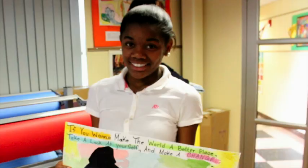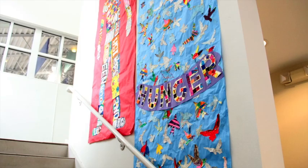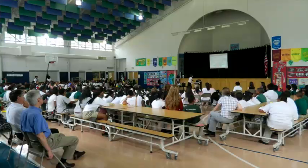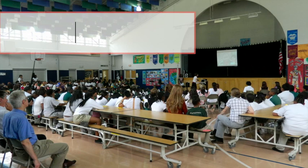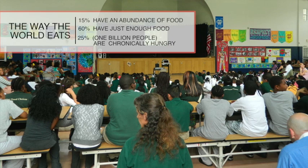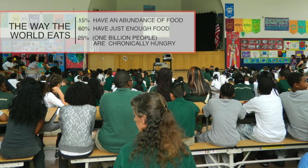We had everybody in the school come to the assembly — kindergarten through eighth grade — and everybody did something. The art teacher completely outdid herself. The music teacher had students do hunger raps. The physical education teacher did an interpretive dance to Michael Jackson's 'Man in the Mirror.' In our hunger assembly, we used 'the way the world eats.' 15% of the people had a bag with a Rice Krispie Treat, a bottle of water, and candy. 60% had a bag with a bottle of water and a Rice Krispie Treat. And 25% had a bag with just a measly little bottle of water. They all opened it at one time — we didn't know how it would be received, but it was powerful.